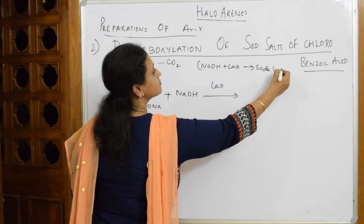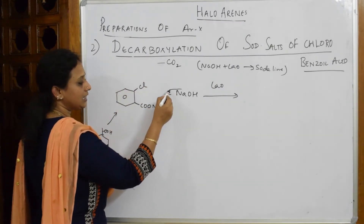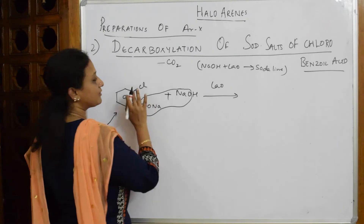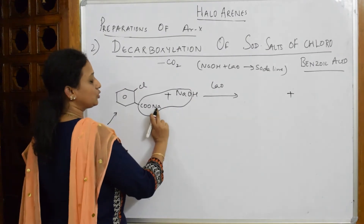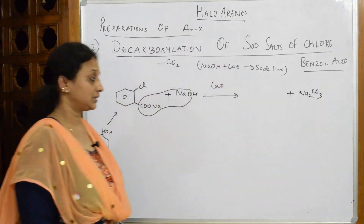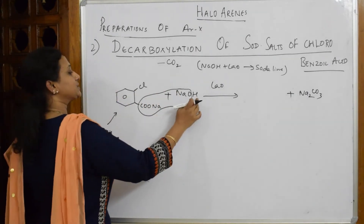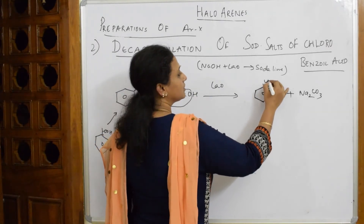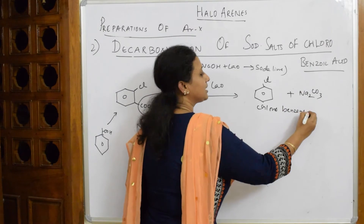Now what is soda lime going to do? I said decarboxylation — observe carefully. Na₂CO₃ (sodium carbonate) comes out of the reaction. Now what else is left? This particular hydrogen shifts and it forms chlorobenzene. So you are preparing your aryl halides from decarboxylation.